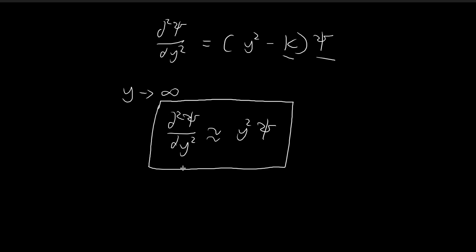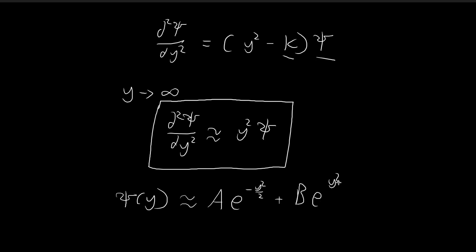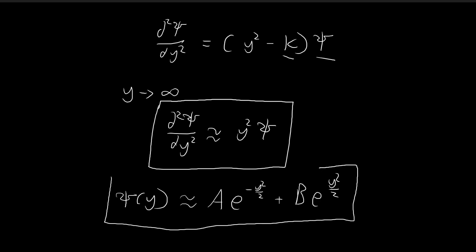Griffiths proposes an approximate solution to this approximate differential equation, so you can see that there are two layers of approximations. The approximation that Griffiths proposes is that xi is going to be approximately equal to this expression over here. The reason how he arrived at this expression is really just a combination of guesswork, experience, and probably divine inspiration — there is really no way to prove this. This is just a part of our guesswork.